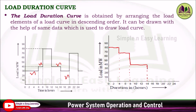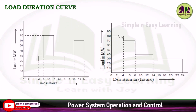The remaining 10 hours carries a load of 30 megawatt. This is how we draw the load duration curve — from maximum to minimum, in descending order: 80 megawatt, then 70, then 40, and finally 30 megawatt. The same approach can be used to draw the load duration curve for monthly and yearly curves. This completes the diagram of the load duration curve.